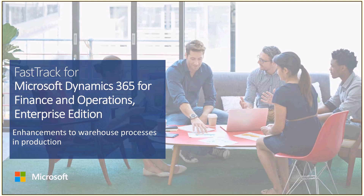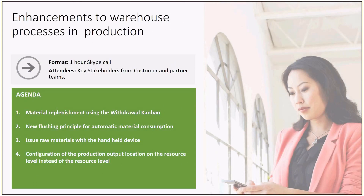Thank you very much and thank you for joining this Fast Track session. My name is Johan Hoffman. On the agenda today we have four enhancements for Warehouse Processes for Production, all available for the Dynamics 365 for Finance and Operations Spring Release. The first topic is Material Replenishment using the Withdrawal Kanban. Next is a new flushing principle for automatic material consumption in production and batch orders. Then we have a new handheld workflow for issuing raw materials, and finally how to configure the default production output location on the resource level instead of only on the resource group level.